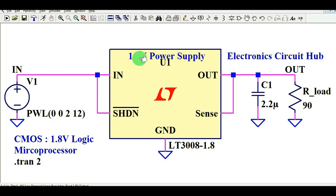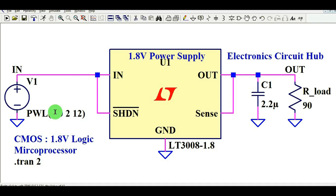This is called a CMOS logic power supply — that means 1.8 volt logic. The main application of this 1.8 volt power supply is logic voltages. It is nowadays widely used in microprocessors. Many modern microprocessors operate at low voltages around 1 volt to 1.8 volt. In a nutshell, you can use this 1.8V power supply in many modern microprocessors.